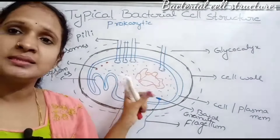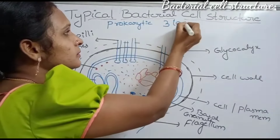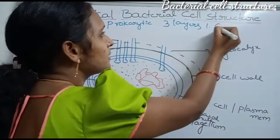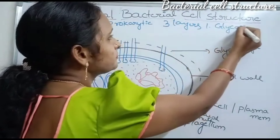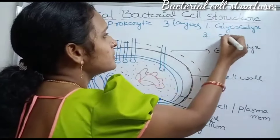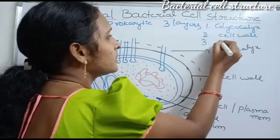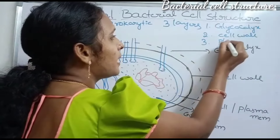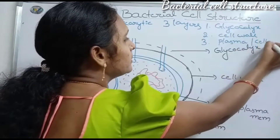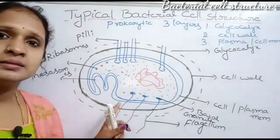Bacterial cells are enveloped by three layers. The outermost layer is the glycocalyx, the middle layer is the cell wall, and the innermost layer is the plasma membrane or cell membrane. These are the three layers that cover the bacterial cell.